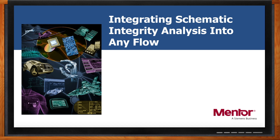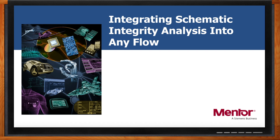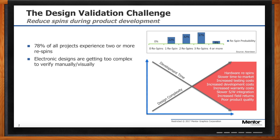Agree — and we're finding that more and more as designs get more complex, especially in the consumer space where we're trying to get more onto the board in a shorter period of time. We've actually found that approximately 78 percent of all projects are experiencing two or more re-spins, and a lot of it has to do with this complexity and the ability to be smart about how you verify the design, especially early on.